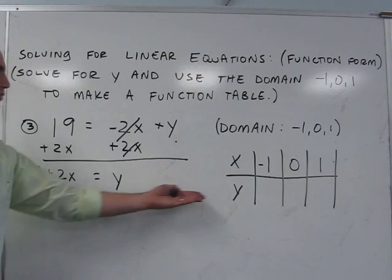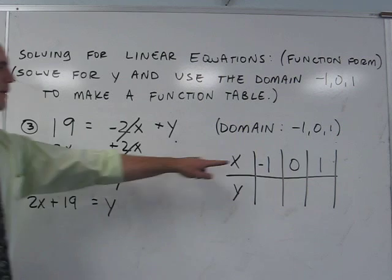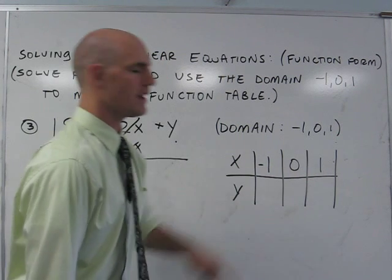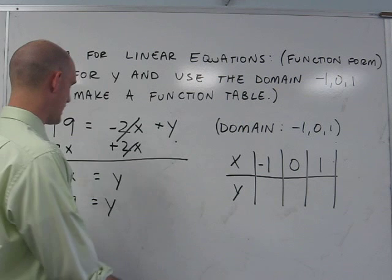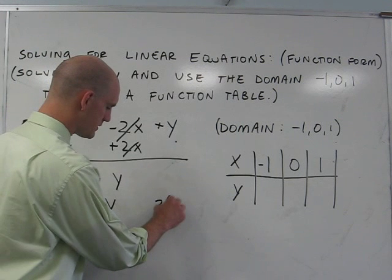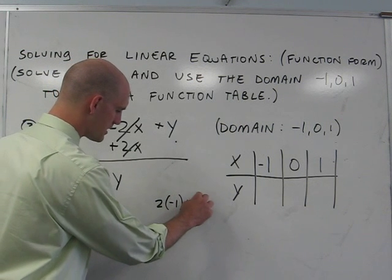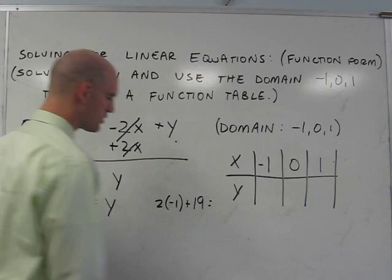To solve for the values of y, I simply put my domain values into the equation. So for x is equal to negative 1, I get 2 times negative 1 plus 19 is equal to y.